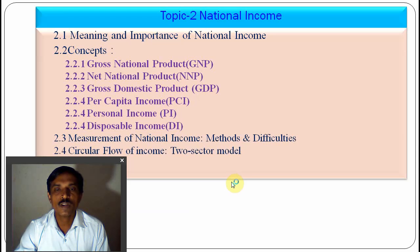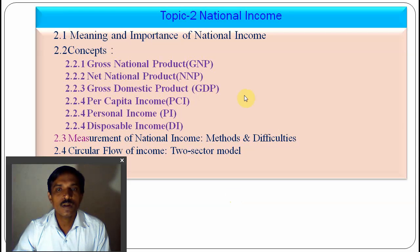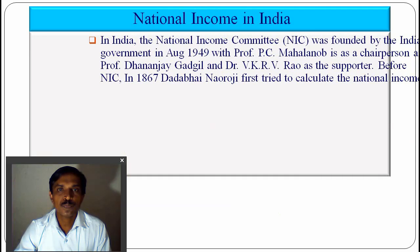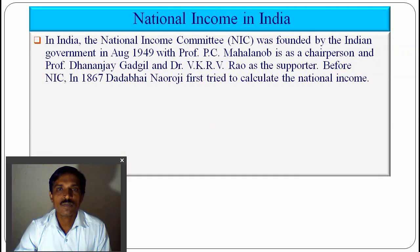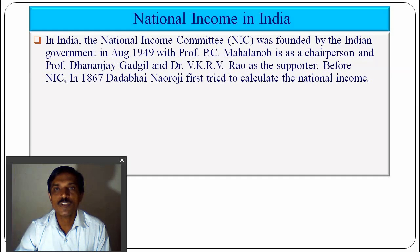Today we see 2.4, the circular flow of income — a two-sector model. Regarding national income in India, we start with the measuring committee. The National Income Committee was founded by the Indian government in August 1949 under the leadership of P.C. Mahalanobis as chairman, and two main members: economist Prof. Ganandai Gargi and Dr. V.K.R.V. Rao.